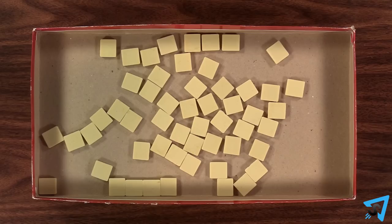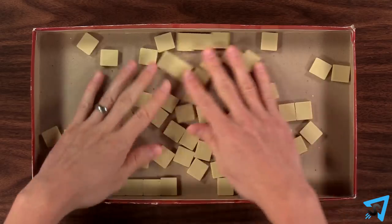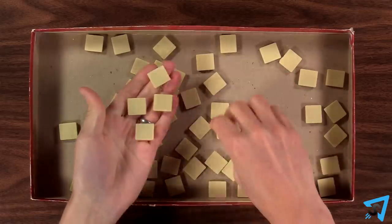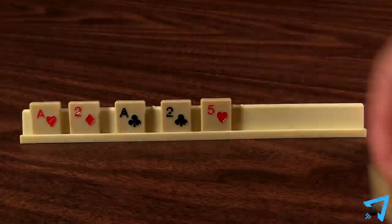Lay out the board. Place all the tiles face down in the lid of the box and mix them up. Each player draws seven tiles and places them on their rack.